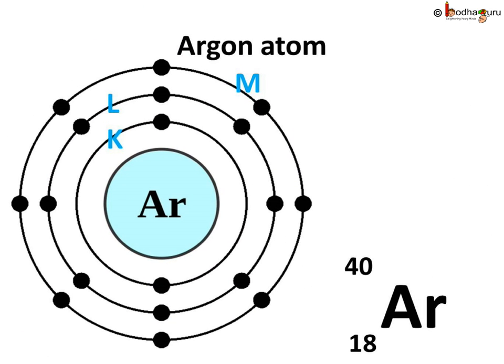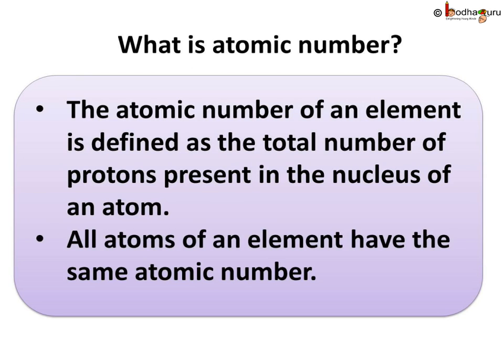What does the symbol stand for? AR is the symbol used to represent argon, 18 is its atomic number, and 40 is its mass number. Also, the number of electrons is equal to the number of protons, so there are 18 electrons in an argon atom.